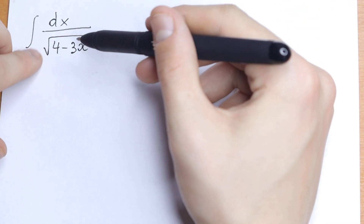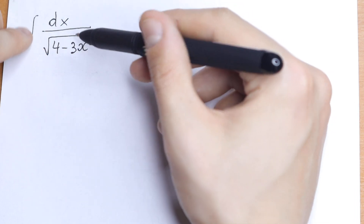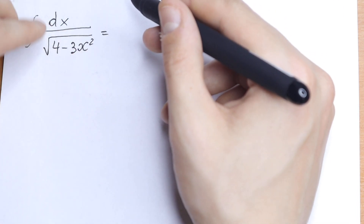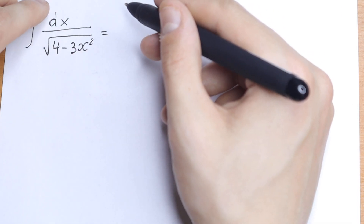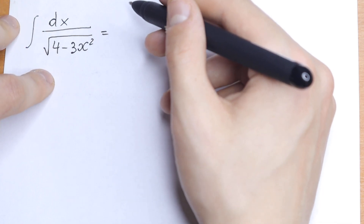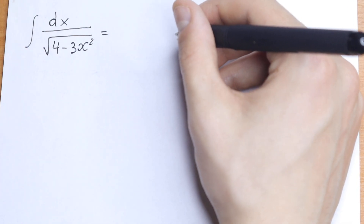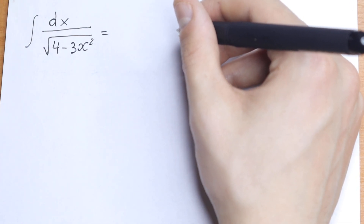On first sight, this integral is really hard because we have a square root, a square, a fraction — numerator and denominator. But I want to suggest a really good trick on how to solve it.